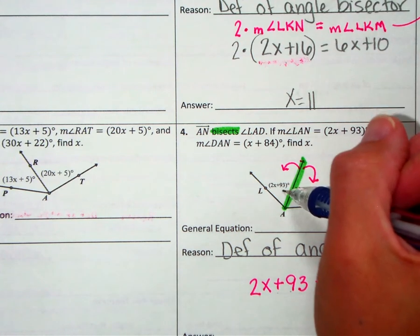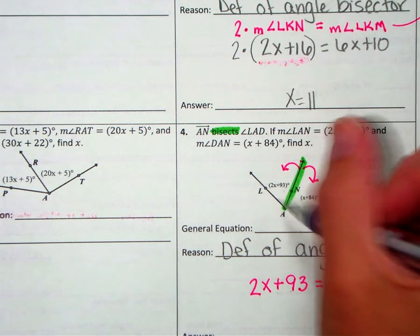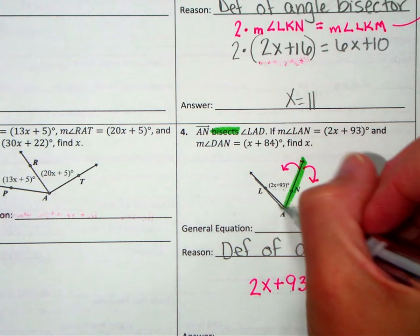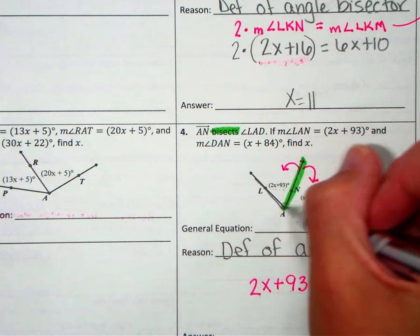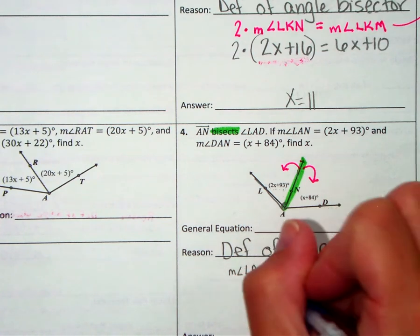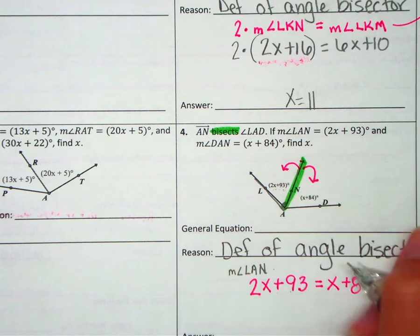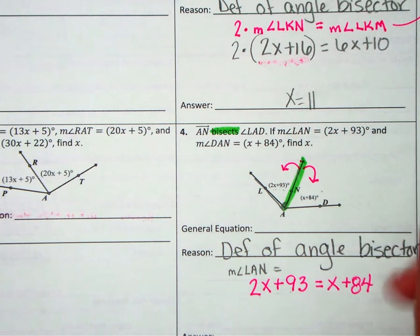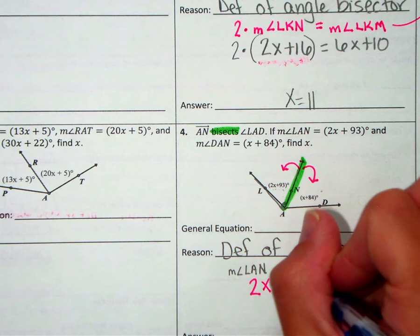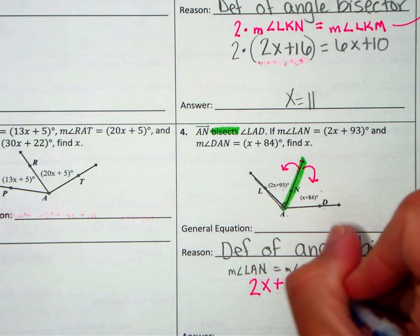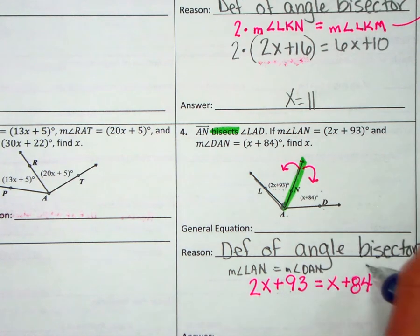Now that's not my general equation, that's my algebraic equation. So can I get the general equation from this? So this 2x plus 93—let's look at the picture this time. Instead of going up, we could go up right here and get it from there, but this 2x plus 93 came from this angle, which is LAN. A just has to be the middle letter. So the measure of angle LAN is equal to—and then let's find this one, which came from here, which is the measure of angle DAN, and that would be my general equation.